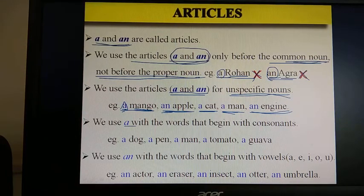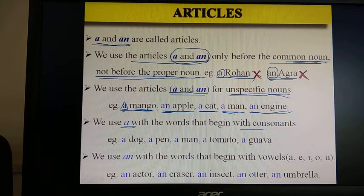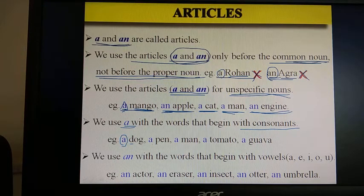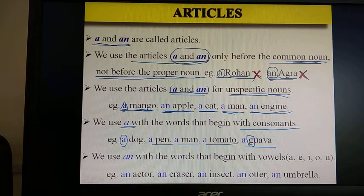We use article a with the words that begin with consonants. When a word begins with a consonant, you use article a before it. For example: a dog, a pen, a man, a tomato, a guava. In all these words the first letter is a consonant, therefore article a is used.